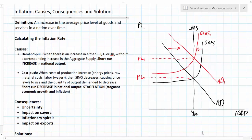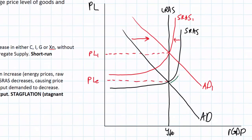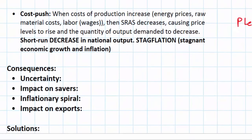As you can see in the graph on the right, inflation exists whenever there is an increase in aggregate demand causing a movement along the short run aggregate supply curve, or when there is a decrease in aggregate supply causing a movement along the aggregate demand curve. In both cases price levels rise, causing several consequences for different stakeholders in the economy.